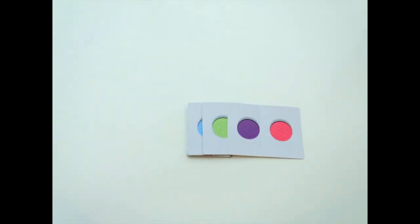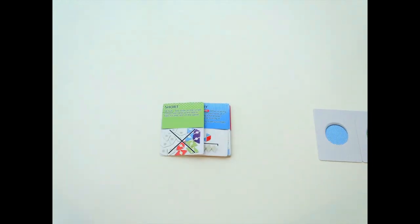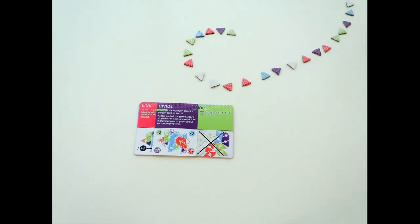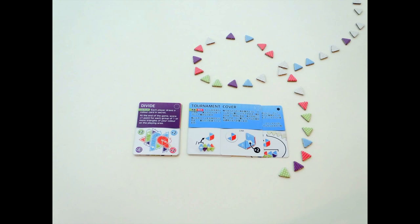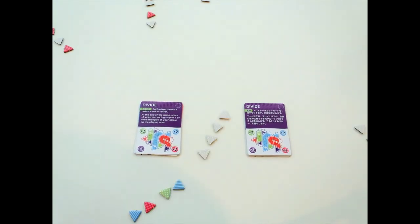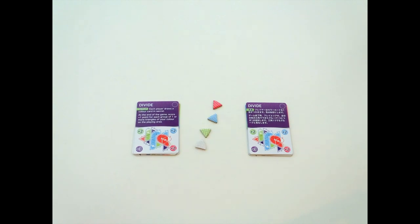Open the box and set aside the four color cards. Separate the rule cards into two sets, English and Japanese, and just use one of them. Also set aside the triangle tokens.